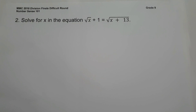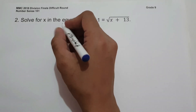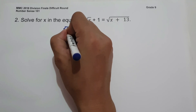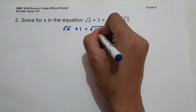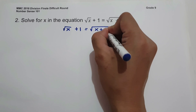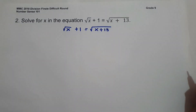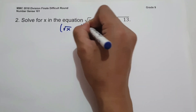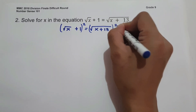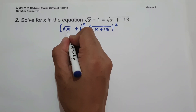On number 2: solve for X in the equation √(X + 1) = √X + 13. To find the value of X, we set up √(X + 13). To eliminate the radical sign, we are going to square both sides of the equation.